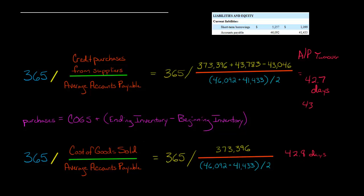So you see, in this case, there's not that much of a difference, 42.7 versus 42.8. But it's more accurate to look at the credit purchases from suppliers in the numerator when you're calculating this.